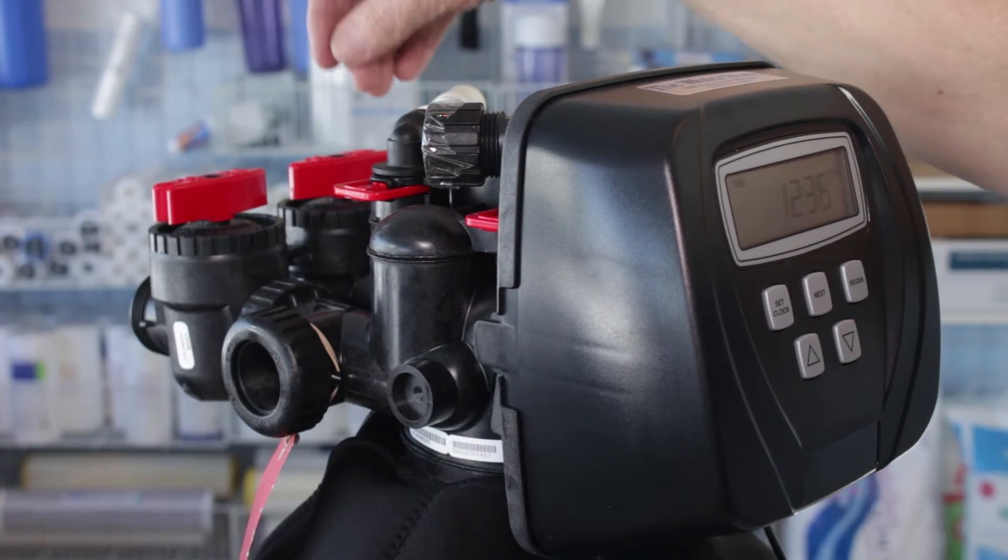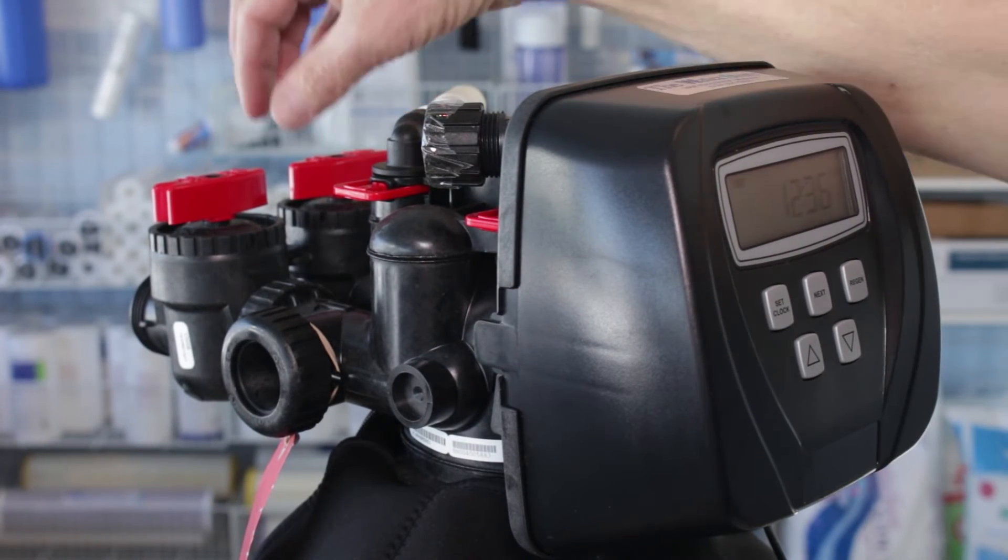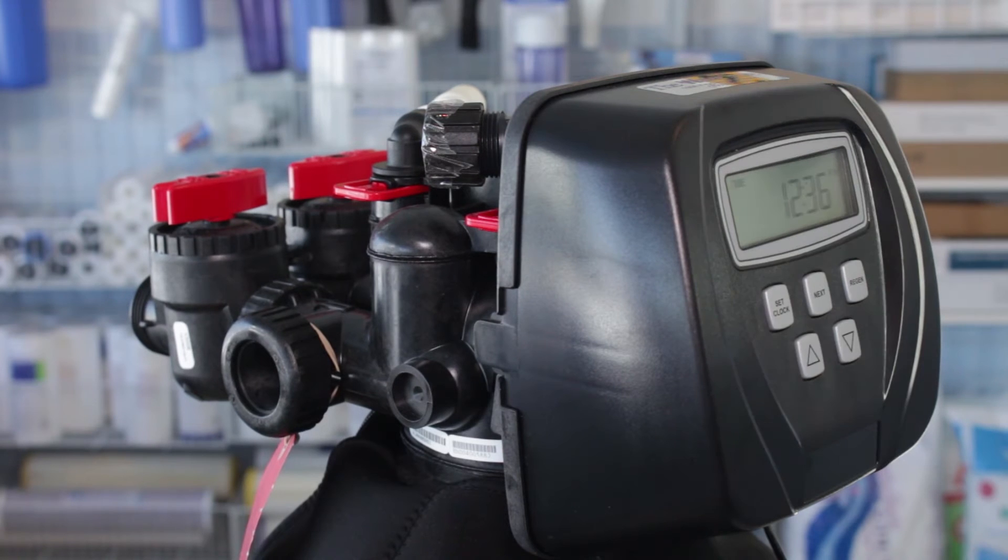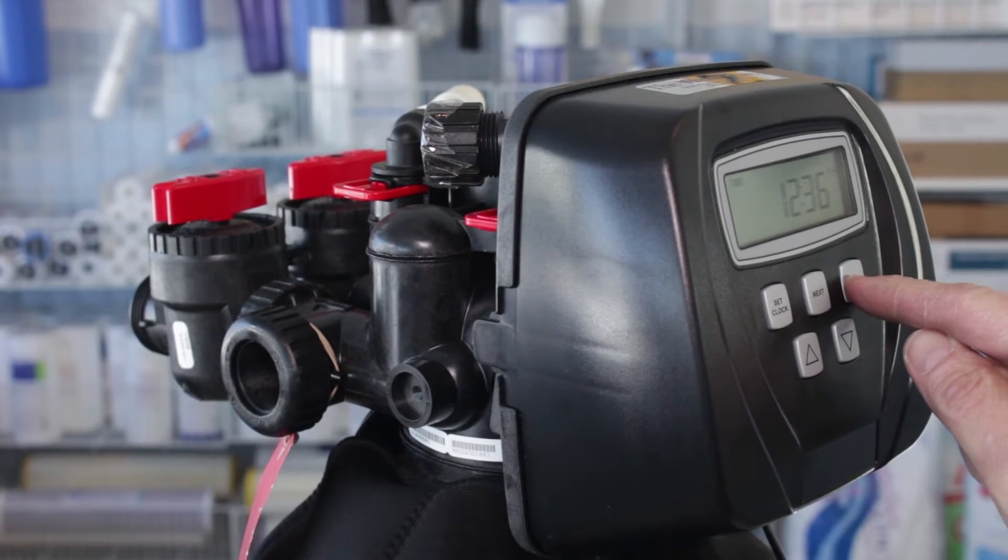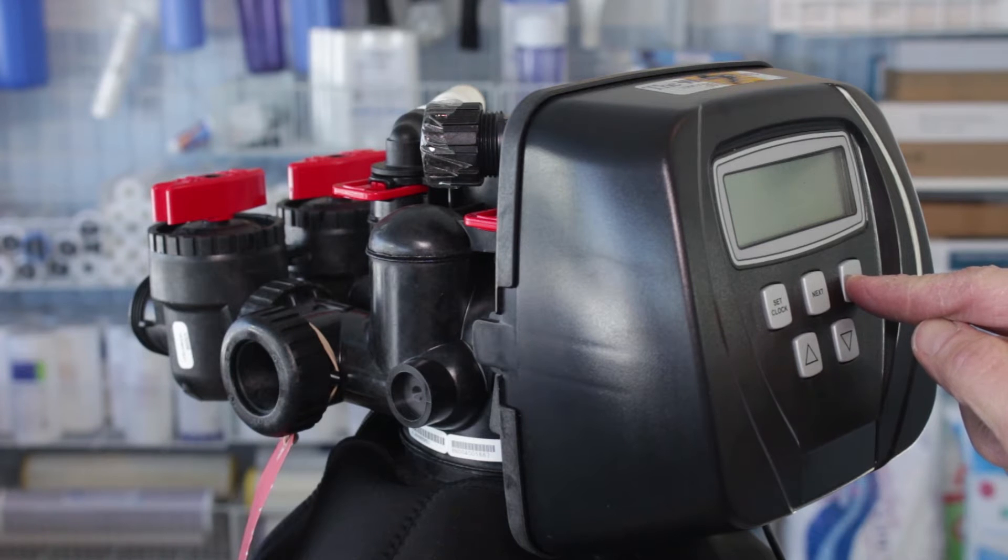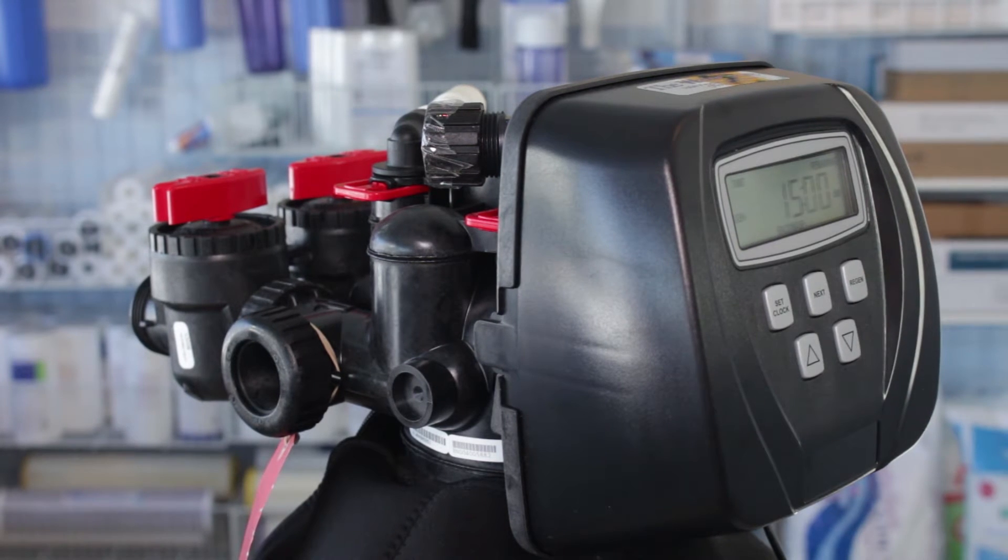Starting with the valve in the bypass position—that's these two red arrows pointy ends facing each other—you want to press the regen button and hold it down for about five seconds. After five seconds you'll hear the motor start up, then you can let go, and it's first going to go into the backwash cycle. The backwash cycle is where it's going to fill up the tank and exhaust all the air.